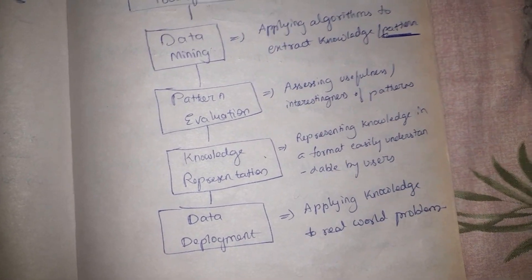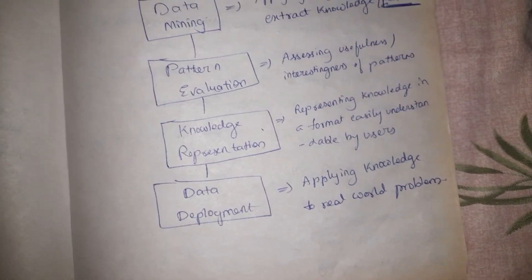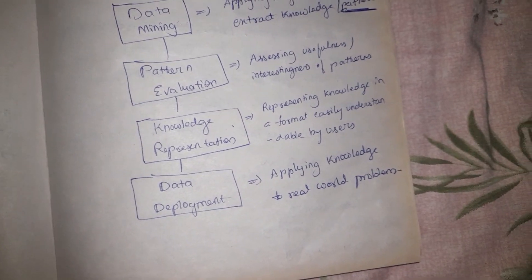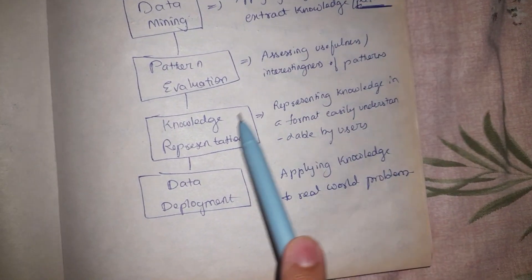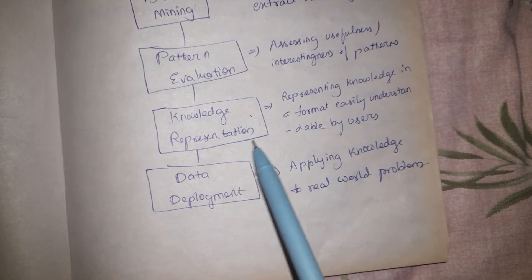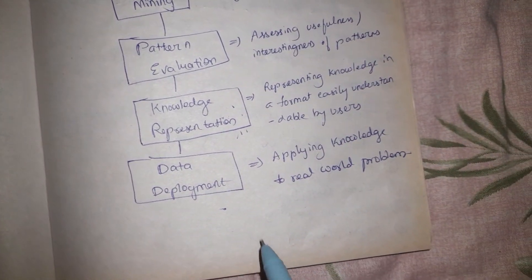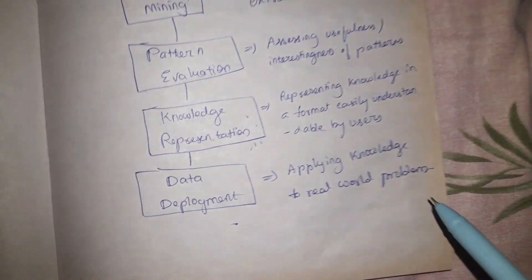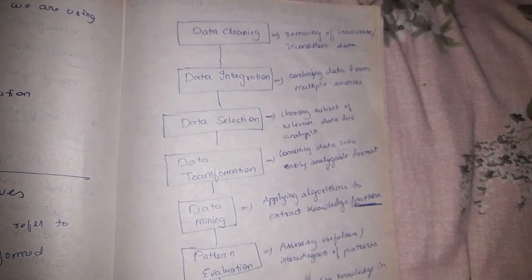We represent knowledge to the end users so that it can be understandable in a simple format, pretty easily, like a diagram or bar graph or something like that. That is done in knowledge representation. After we have represented this knowledge, we need to deploy it, we need to use that particular pattern to solve a real world problem.